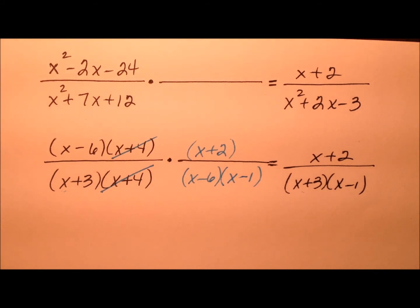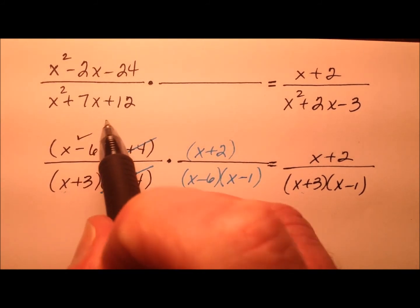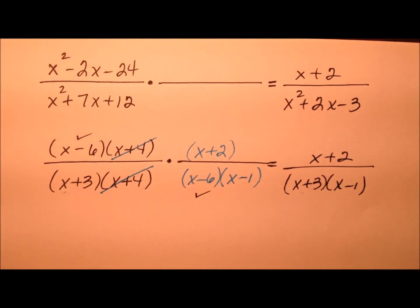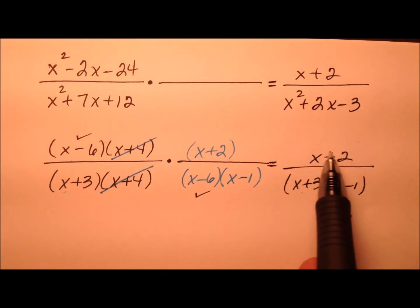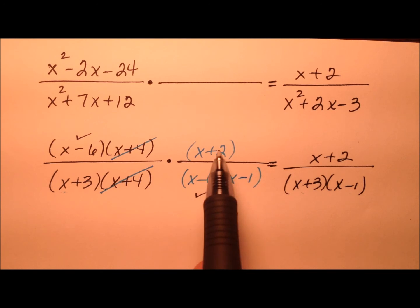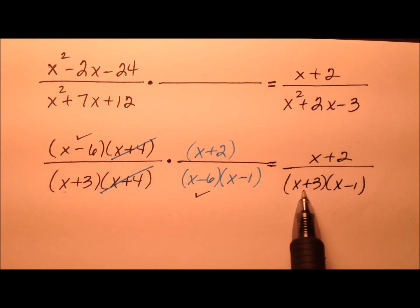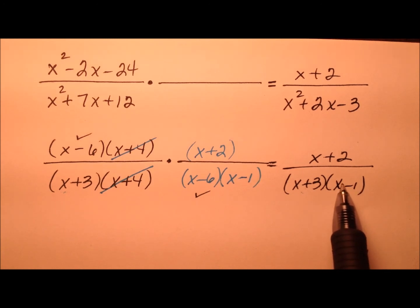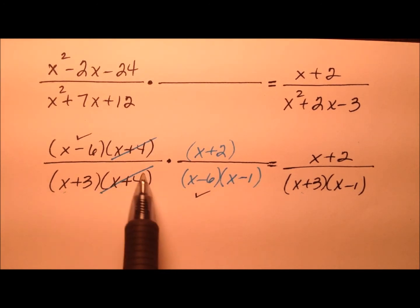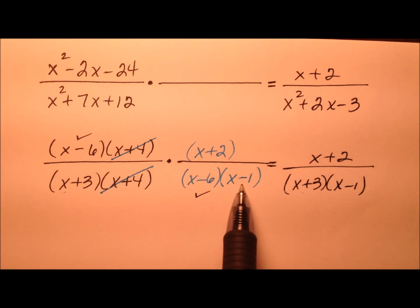So if we looked at this now, the x minus 6 here and the x minus 6 here would have canceled because he's no longer over here in the product, and this x plus 2 was here and didn't get canceled, the x plus 3 was here and didn't get canceled, and the x minus 1, which is here now, wasn't over here, so he must be here.